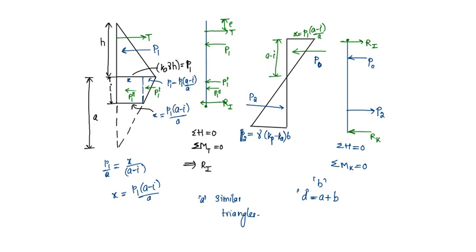For safety, increase d by 30 percent — a 30 percent increase in the d obtained. That is, 1.3d is the depth provided.